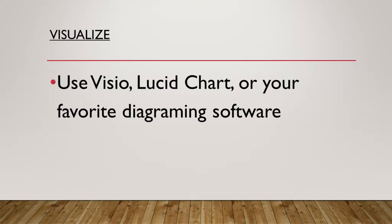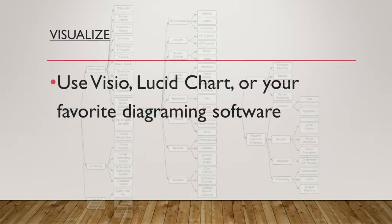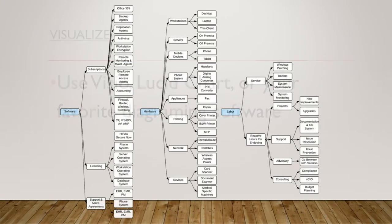This is where we go off the reservation. Most companies don't try to visualize their expenses, but we find it very important to help our customers visualize where their money is going. So we're going to get out either Visio, Lucidchart, or whatever your favorite diagramming software is, and start to break everything down into categories using a tree format — starting with software, hardware, and labor, and then breaking those down further.